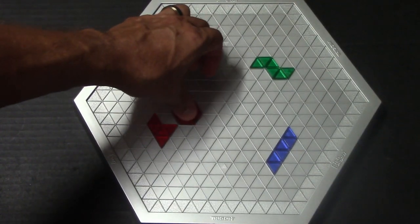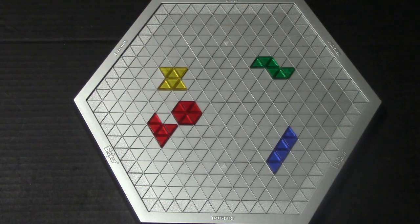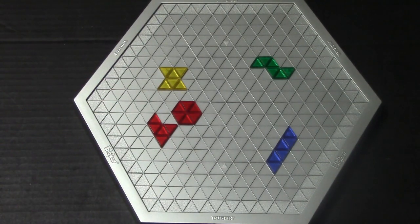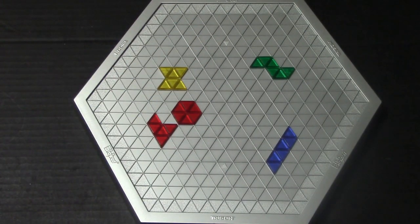For example, I could place a red piece here and it's meeting the corner. Now there's two things with this game. Number one, you're trying to see how many of your pieces you can get on the board. But at the same time, you're also trying to prevent your opponents from getting pieces on the board themselves.